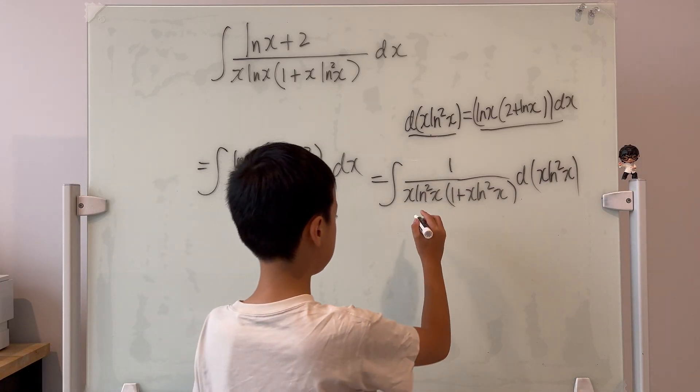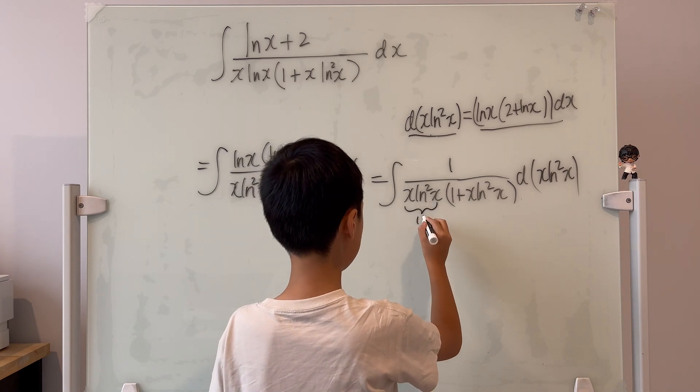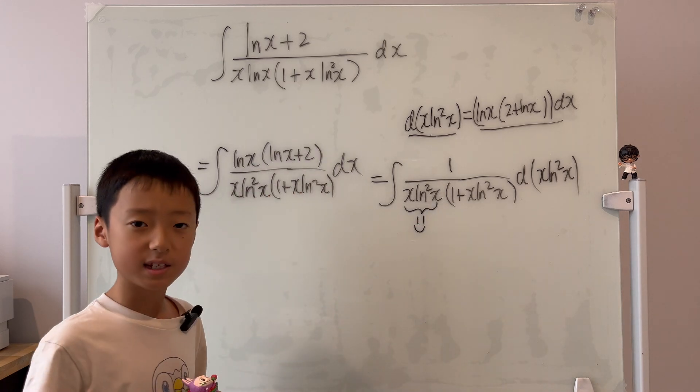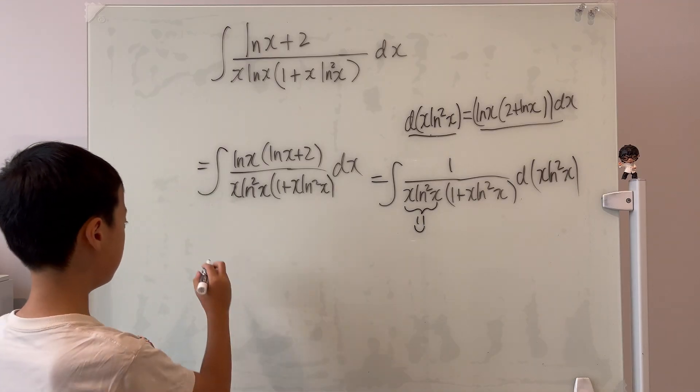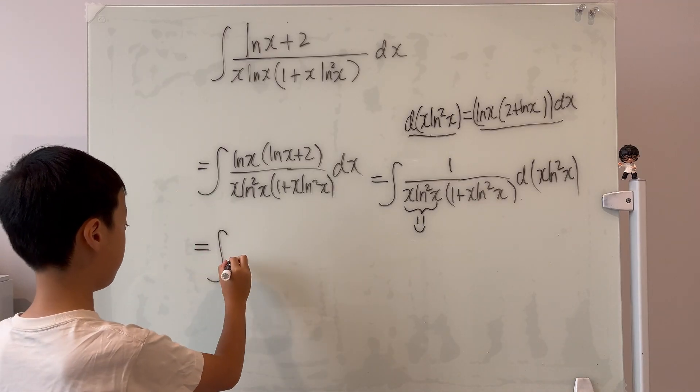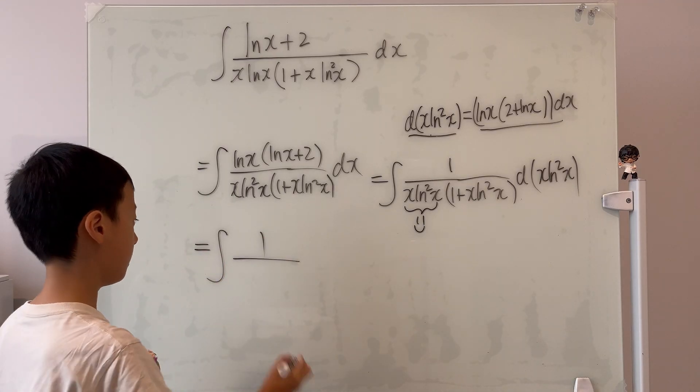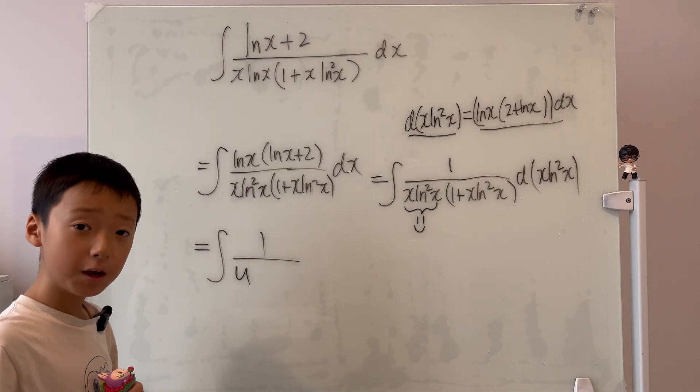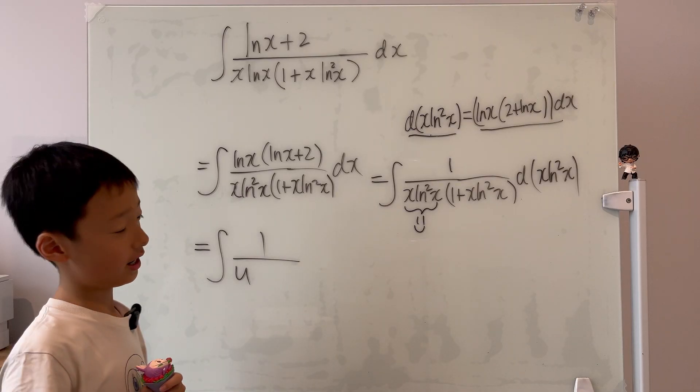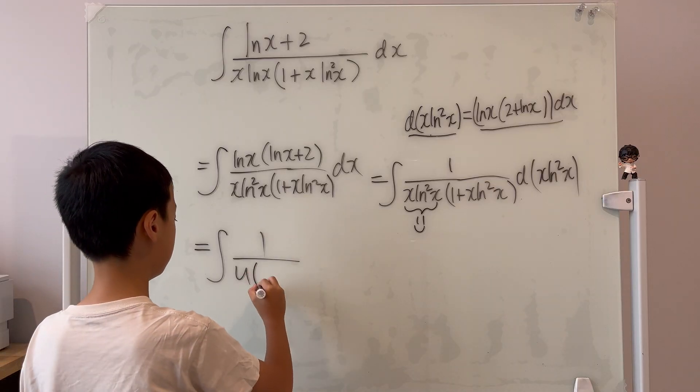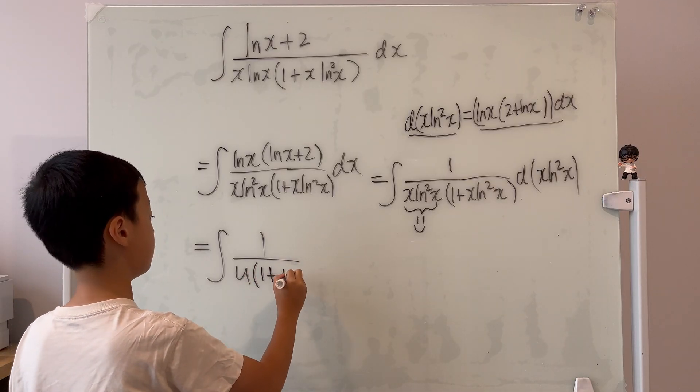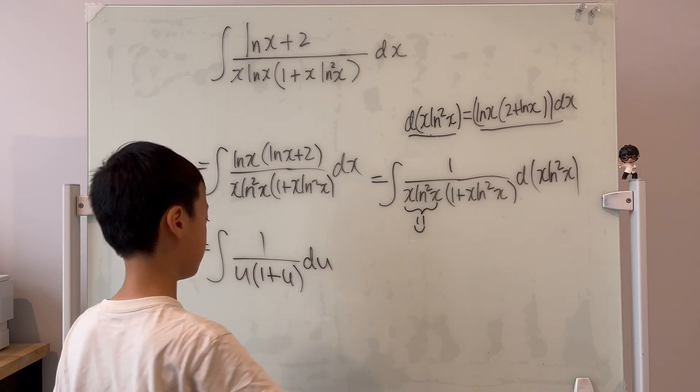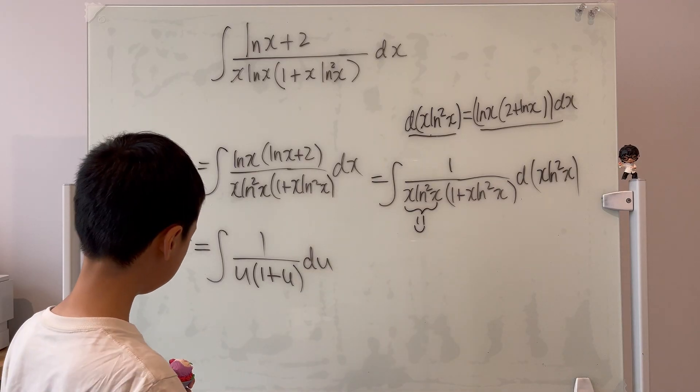So it will be the integral of, the bottom stays the same, but the top is 1 now. And then, d of this thing. So now we can do a u sub. Let this equal to u or my smiley face. So it's equal to the integral of 1 over u times 1 plus u du. Look, three smiley faces.